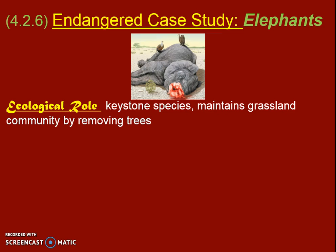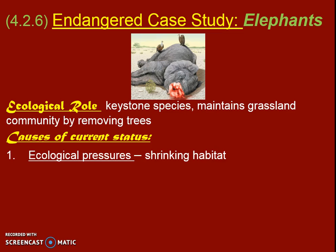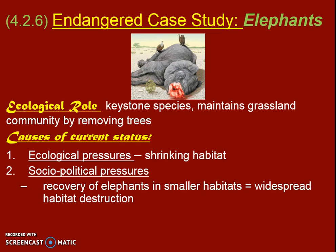Elephants are considered a keystone species, meaning they're very valuable to the ecosystem and affect whether other organisms survive. They maintain the grassland community by removing trees and restarting ecological succession — that's why they're keystone. They are considered cute megafauna, which is one reason they get so much media attention. There's a lot of ecological pressure because their habitats are shrinking. There are also social and political struggles as their habitats become smaller. Elephants are widely poached for their ivory, and poachers often don't care if they kill the elephant in the process. The ivory can go to market, and through CITES we would potentially be able to track down the poachers, though it's not 100 percent.